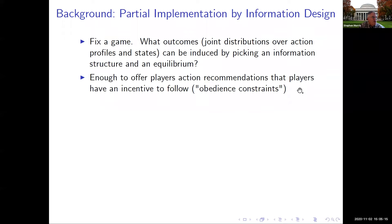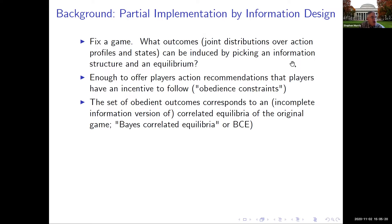We call that partial implementation from the mechanism design literature — we say partial implementation when you get the right outcome if you get to pick the equilibrium. This problem has been much studied and is well understood. In particular, it has the feature that it's enough to simply provide players with action recommendations that they have an incentive to follow. Myerson called these obedience constraints. The set of obedient outcomes corresponds to a set of correlated equilibria — in incomplete information settings, we call these Bayes-correlated equilibria.